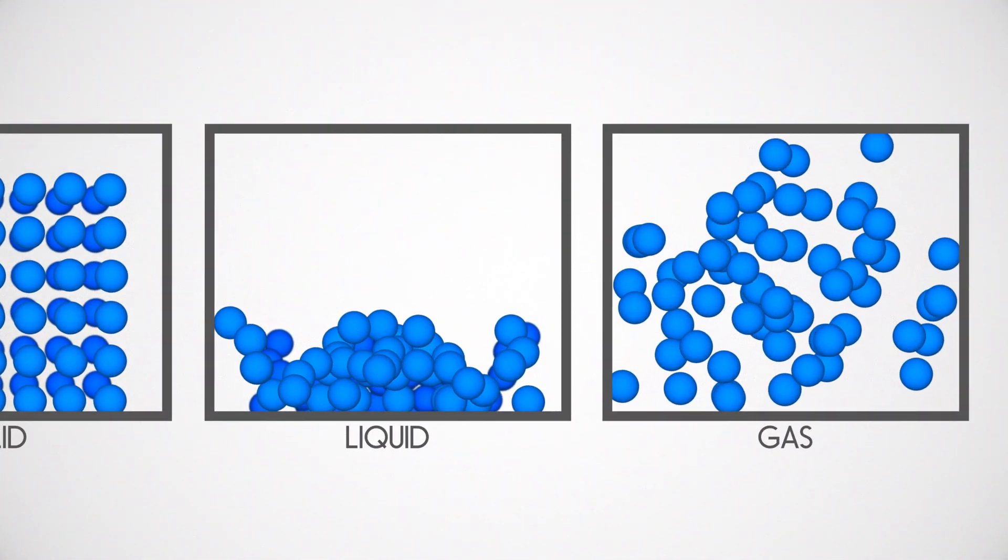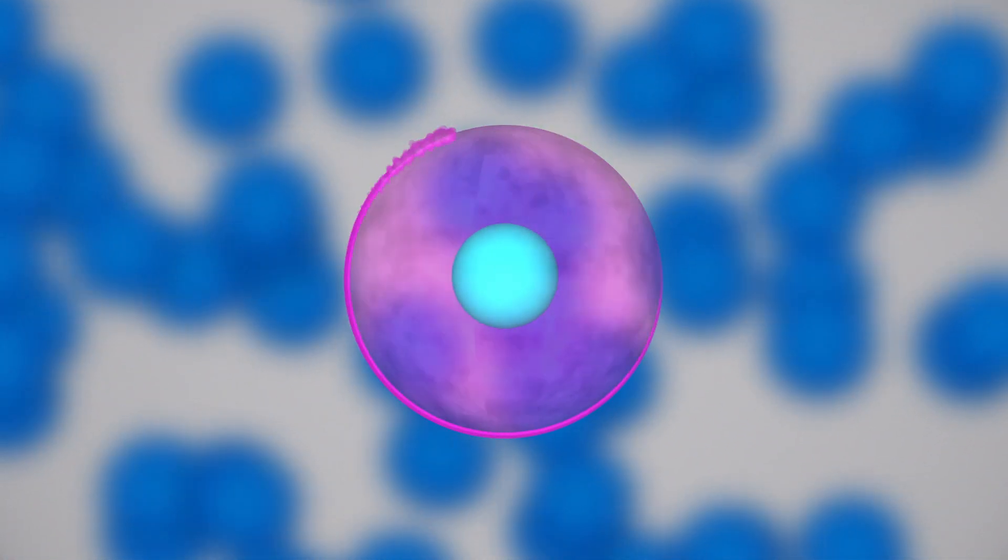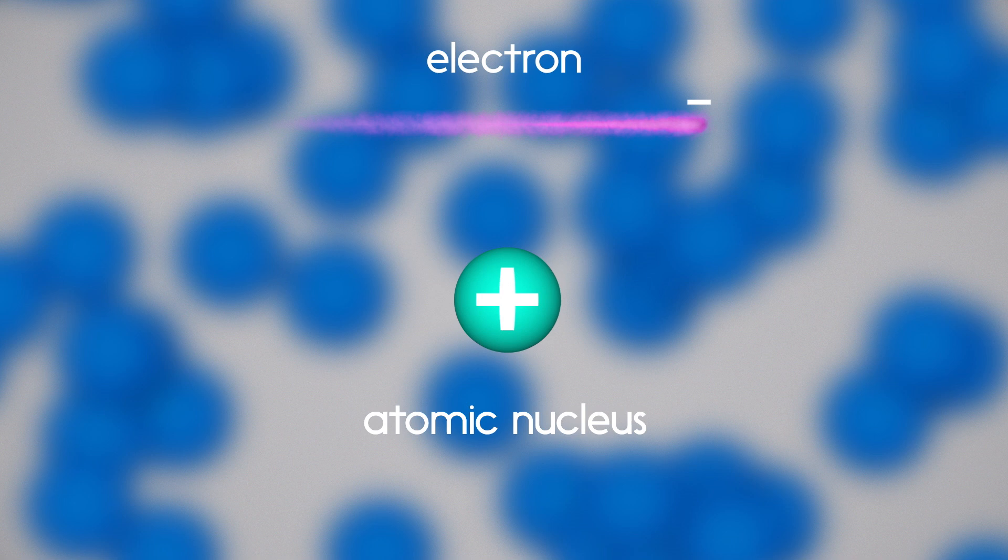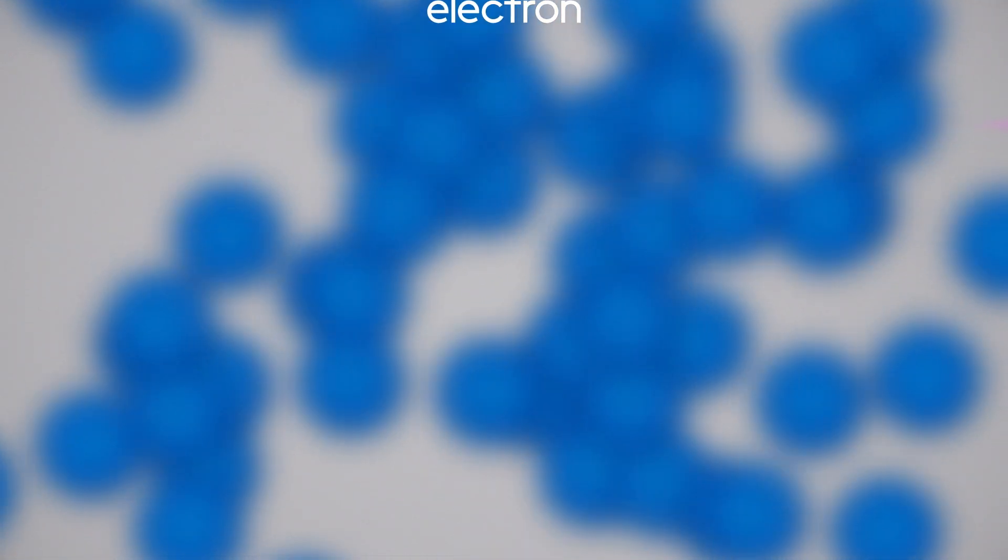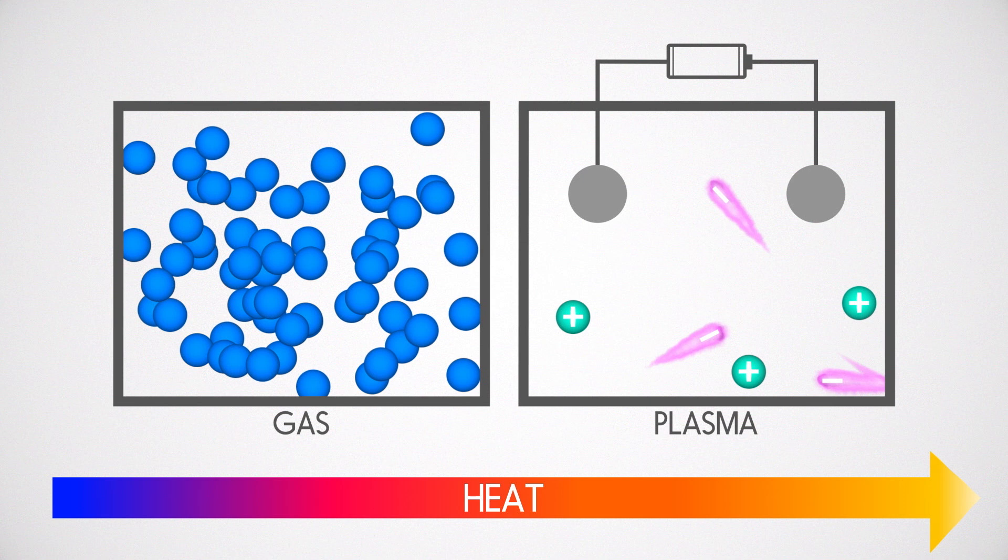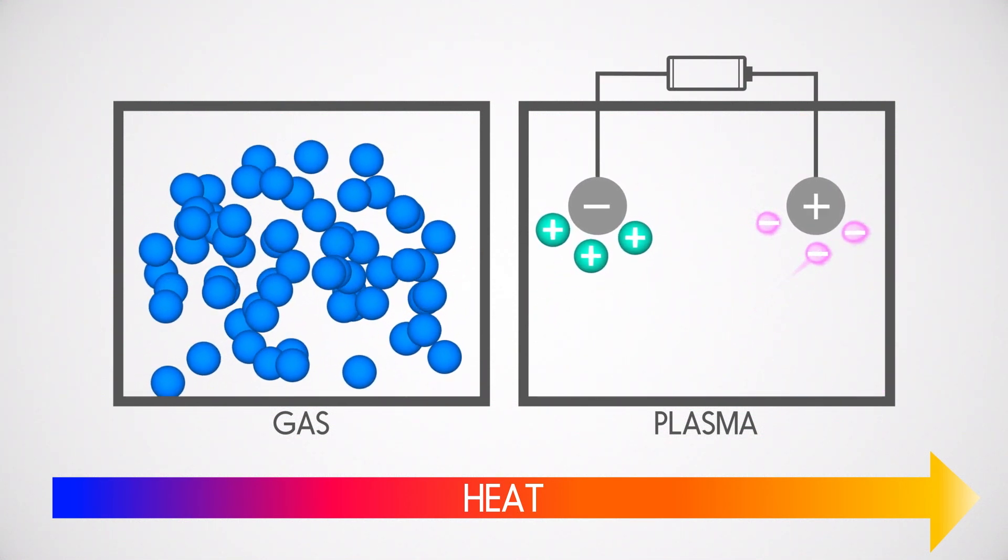But now what happens if we give that gas even more energy? With even more energy we can strip the gas particles into their separate charges. So a plasma is simply an electrically charged gas. It behaves a bit like a gas but with extra effects due to these freely moving charges.